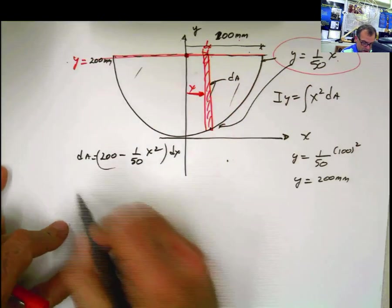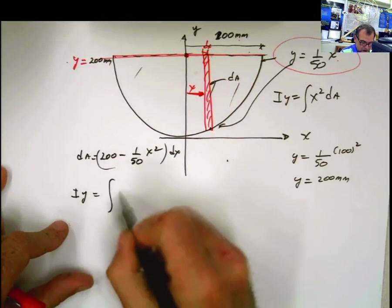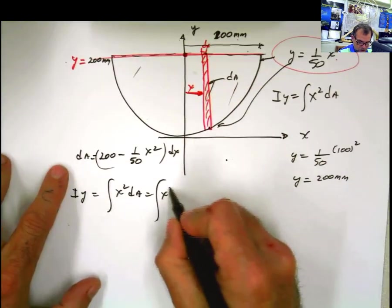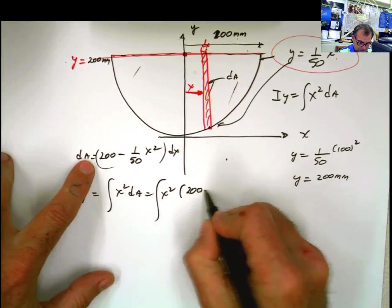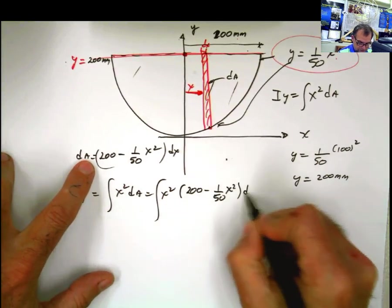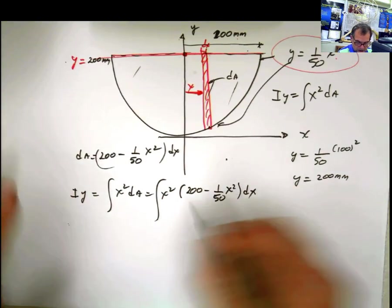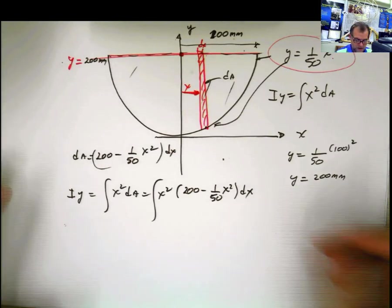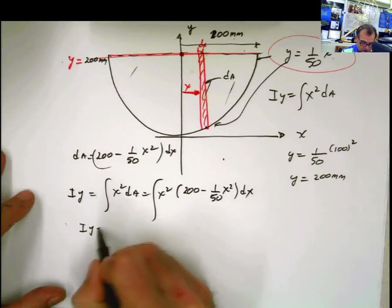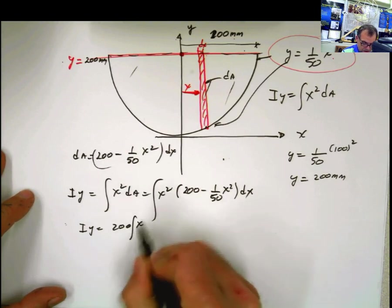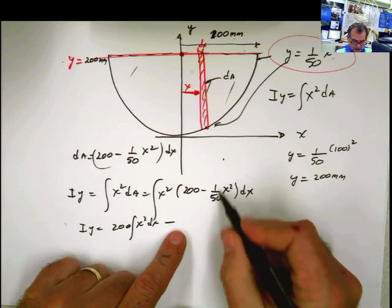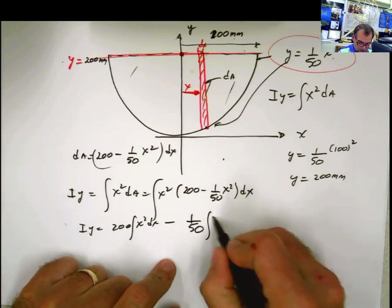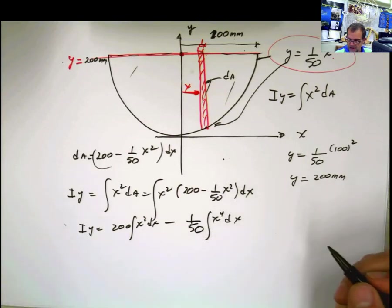Integral of x squared dA, which is the integral of x squared dx multiplied by this. And I solve for that. 200. I'm going to separate this into integrals. So you just say that I y is going to be equal, this is constant, I take it outside the integral, x squared dx minus. Then I take this, 1 over 50 is constant, and also 1 over 50, integral of x to the fourth dx. And that's basically what we have over there.